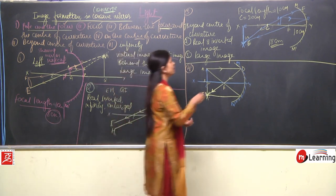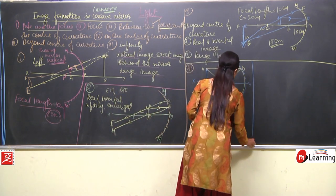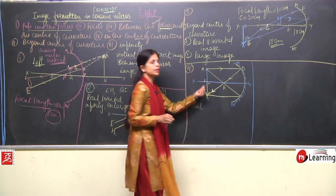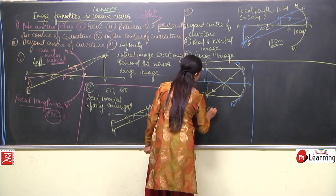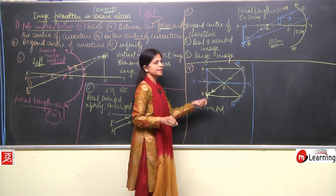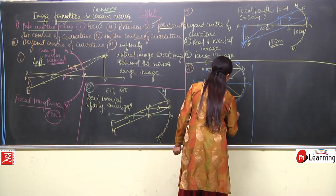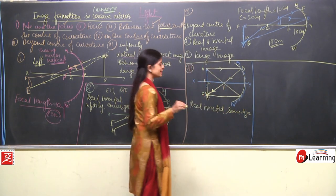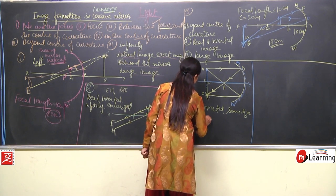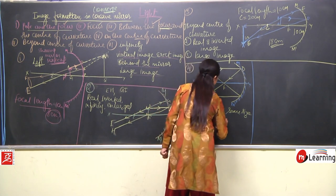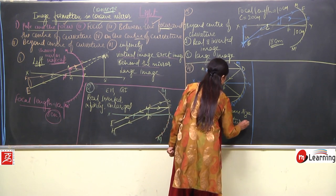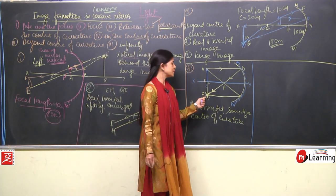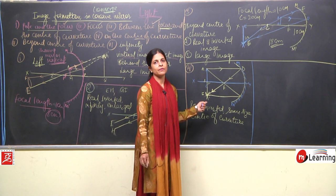Now, which kind of image is formed here? It is real — a real image is always inverted. It is of the same size as the object. And where is it formed? It is formed on the center of curvature itself. So this was the fourth case — object kept on center of curvature, image formed on center of curvature.